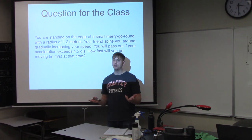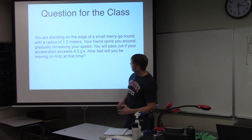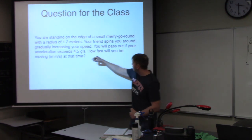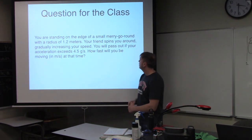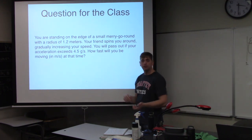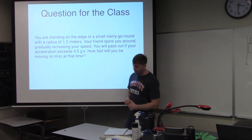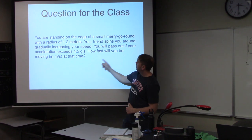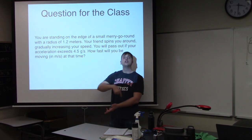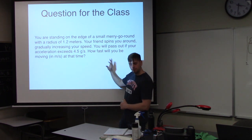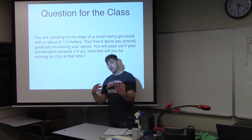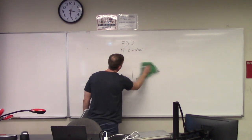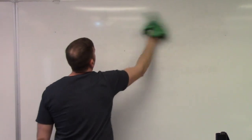Here's a practice problem using the centripetal acceleration formula. You're standing on the edge of a merry-go-round with radius 1.2 meters. Your friend gradually increases your speed. You'll pass out if your acceleration exceeds 4.5 g's — where g = 9.8 m/s². What is your speed in meters per second at the moment you pass out? Pause the video and try to work it out.